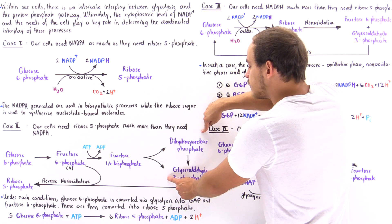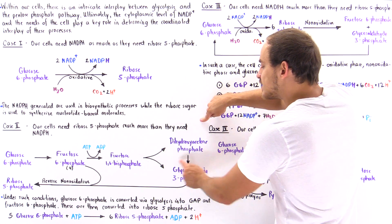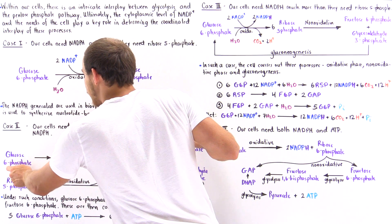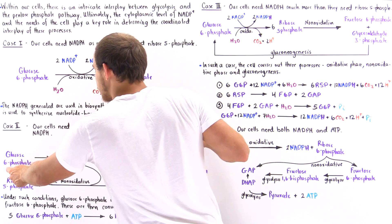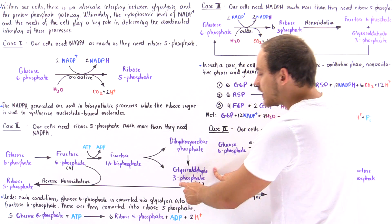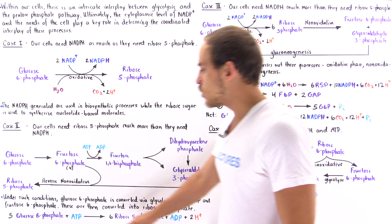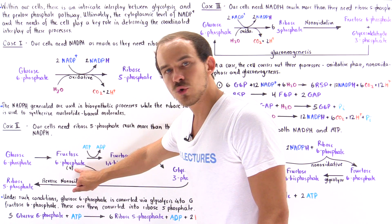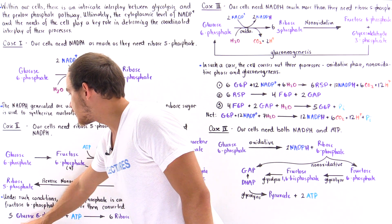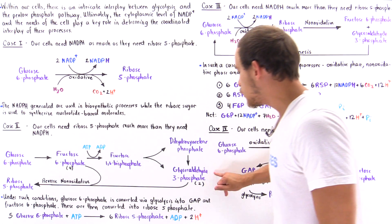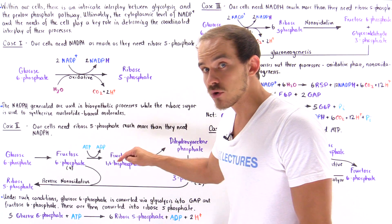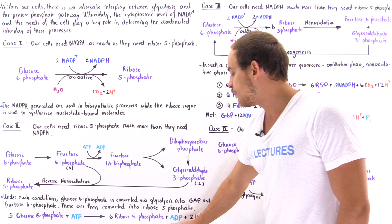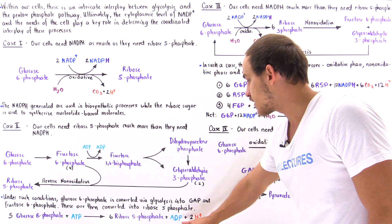The fructose-1,6-bisphosphate is broken down into dihydroxyacetone phosphate and glyceraldehyde-3-phosphate, and the dihydroxyacetone phosphate is readily converted into glyceraldehyde-3-phosphate. So the fifth glucose-6-phosphate entering the glycolytic pathway yields two glyceraldehyde-3-phosphate molecules. This means four of the five glucose-6-phosphates form four fructose-6-phosphates, while the fifth forms two glyceraldehyde-3-phosphates, consuming one ATP and producing one ADP.